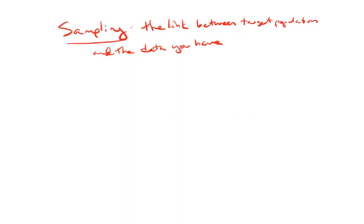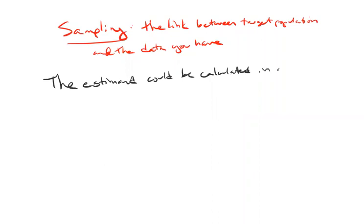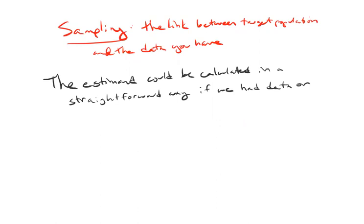The parameter could be calculated in a straightforward way if we actually had data on all the units in our target population. So why don't we just do that? Why don't we gather data on every unit in the target population?